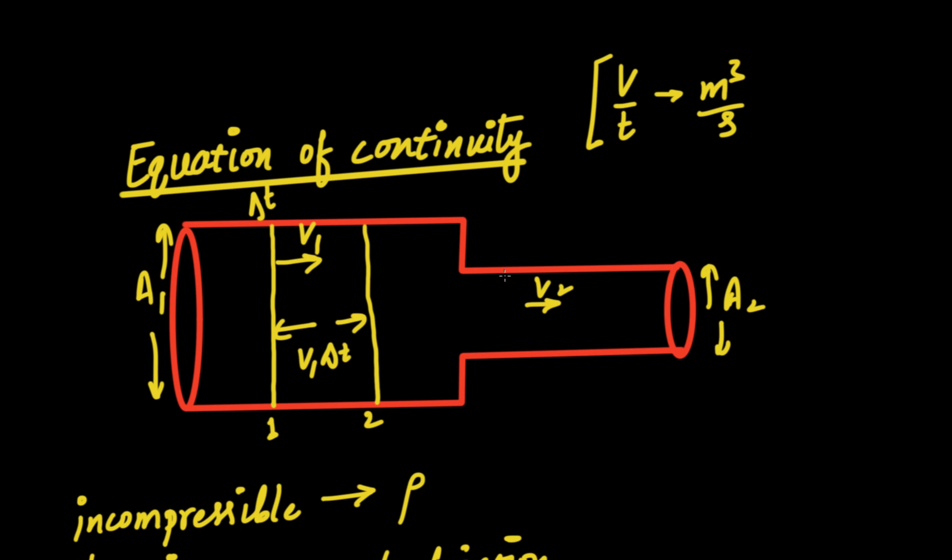At the same time, at the same instant, we'll assume one layer, this one, 1 dash. After the same time delta t, this layer would have moved to some other distance, 2 dash. Again, this distance is going to be v2 delta t.